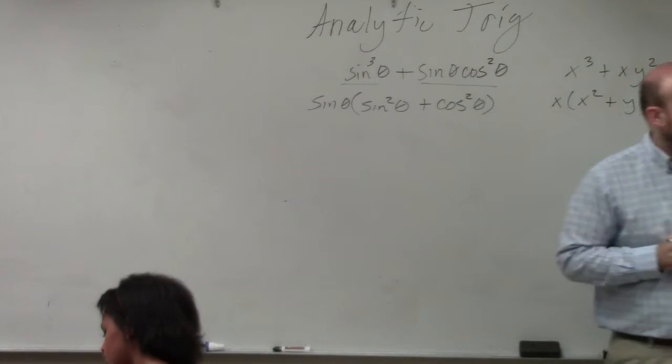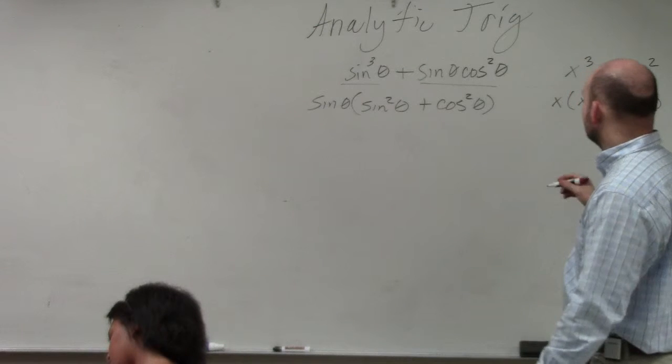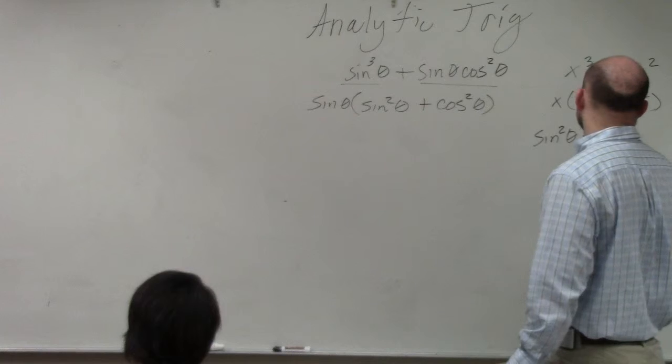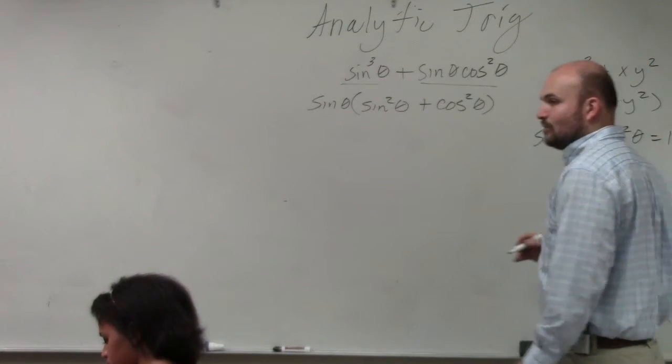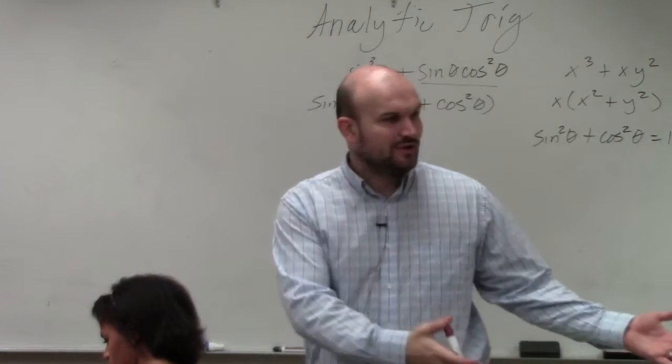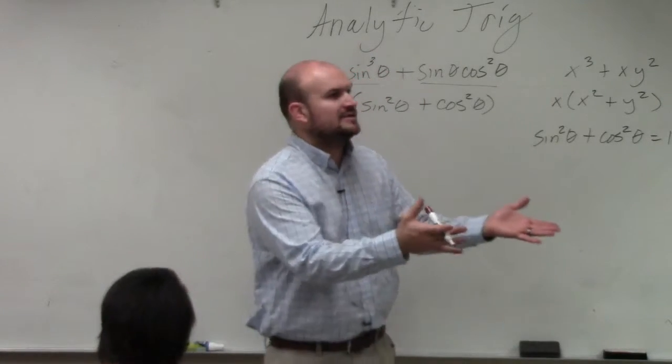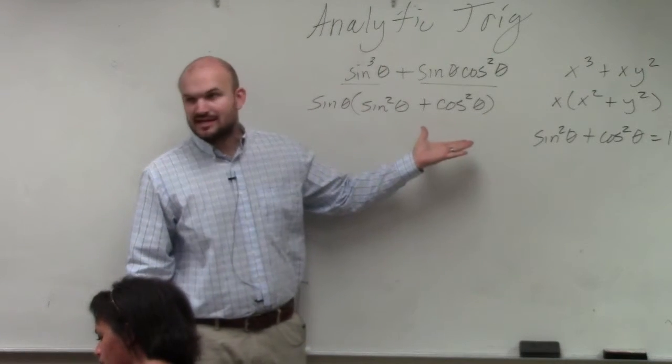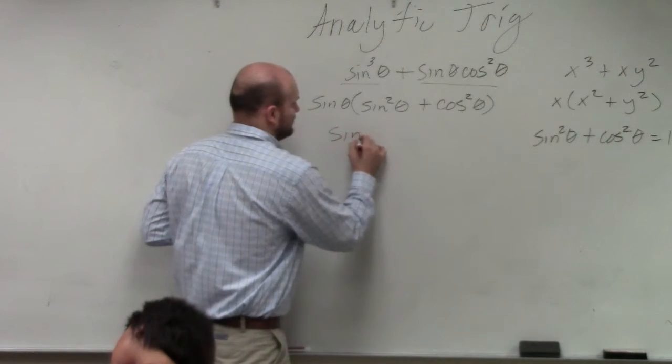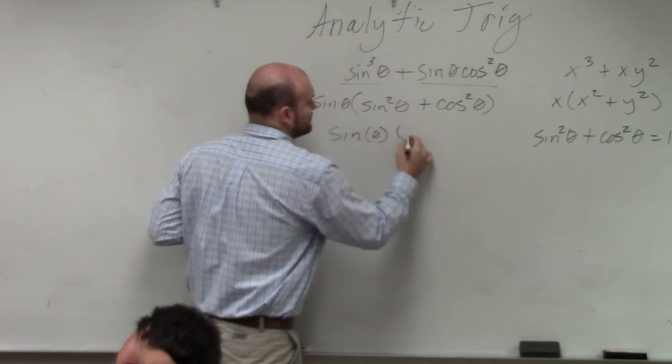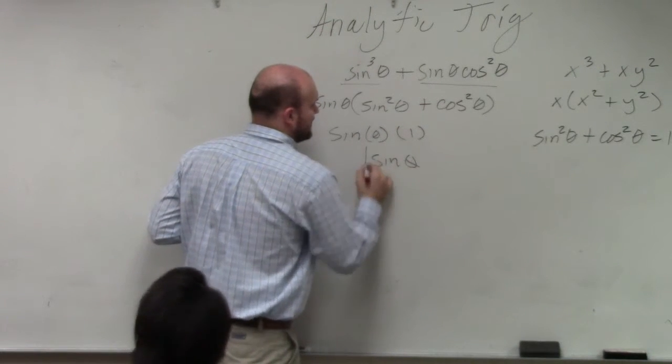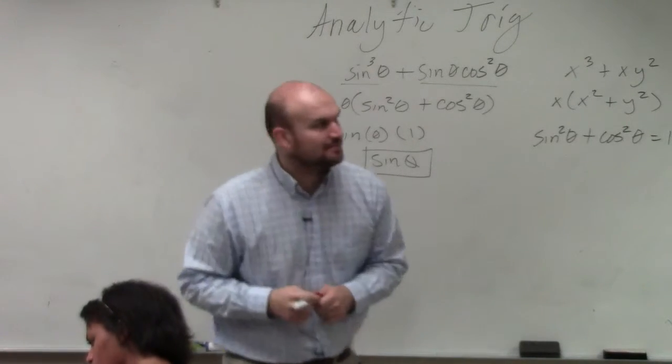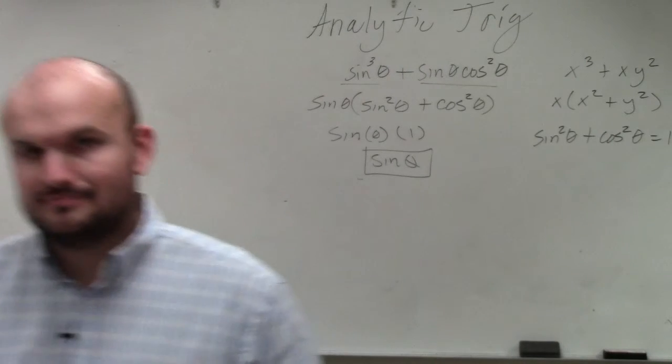Which introduces us to our first trigonometric identity, which is called your Pythagorean identity. And the Pythagorean identity says sine squared plus cosine squared is equal to 1. So again, you'll have this provided to you. I'm just writing it up there because I know you guys don't have it. So ladies and gentlemen, do you guys see inside this parenthesis is sine squared plus cosine squared? So guess what? That's sine of theta times 1, which is just sine of theta. Thank you. Go. Okay.